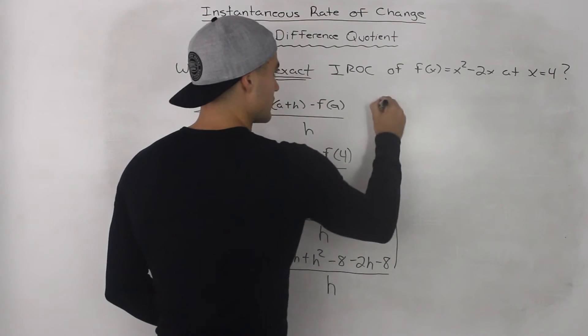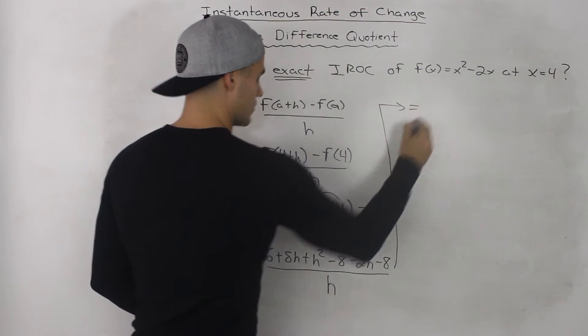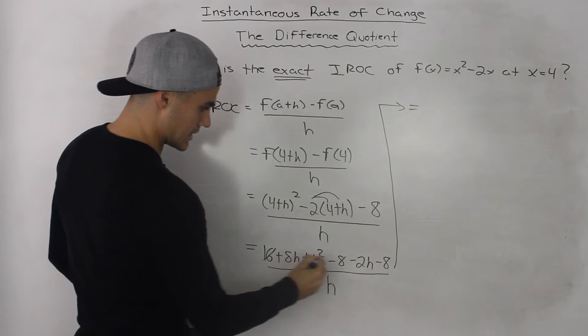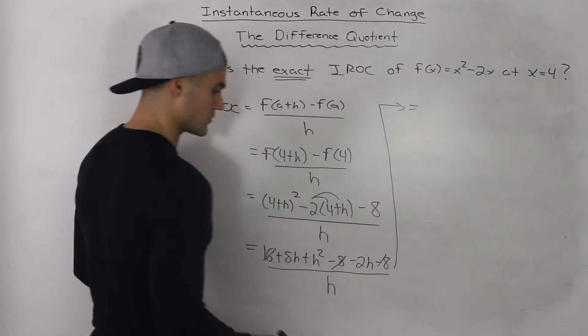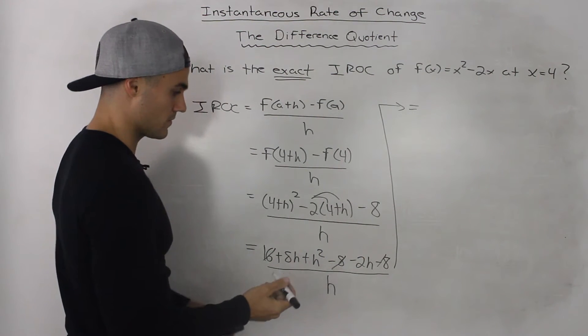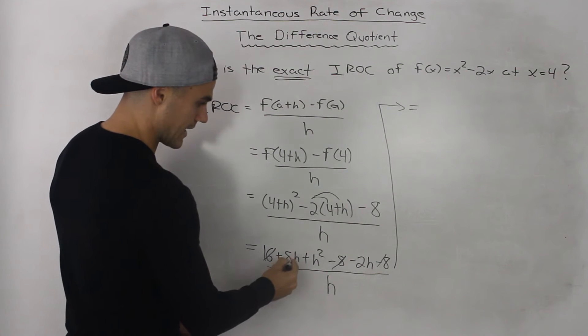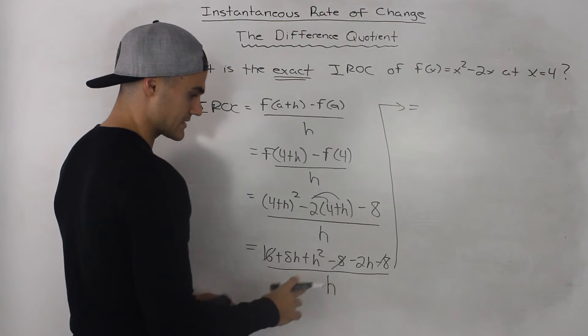Now simplifying this even further, notice how the 16 minus the 8 minus the 8, those cancel out, those net out to 0. And the 8h minus 2h, that nets out to 6h.